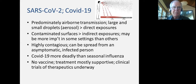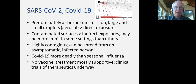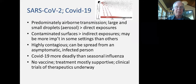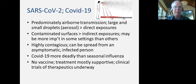Contaminated surfaces probably also play a role if these droplets fall onto chairs, tables, beds, railings, and so on, and then people touch those surfaces. That can be an indirect method of exposure because then your contaminated hand may be brought up to your face, into your mouth, your nose, into your eyes. We still don't know how much contaminated surfaces contribute to transmission, although it's probably more important in some settings than in others.